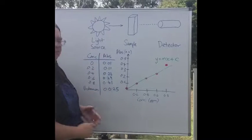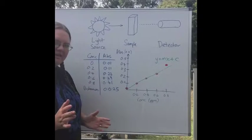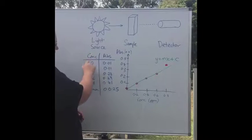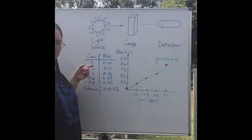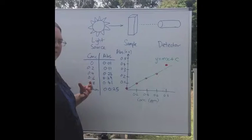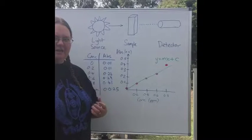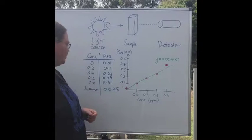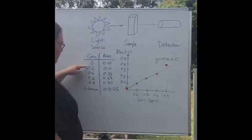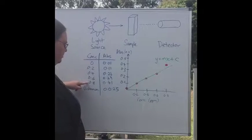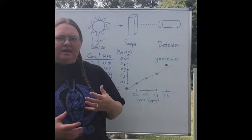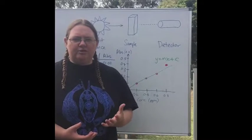What you usually will get is a whole bunch of numbers. I've got concentrations here—this is what we know. We will have prepared our standards with accurately known concentrations. Here I've got zero, 0.2, 0.4, 0.6, 0.8, and they're in ppm. You would put your samples into your spectrometer.